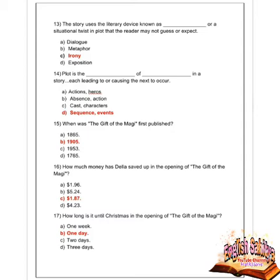Next question: the story uses the literary device known as what — a situational twist in a plot that the reader may not guess or expect? Options are dialogue, metaphor, irony, and exposition. Option C is correct — irony.